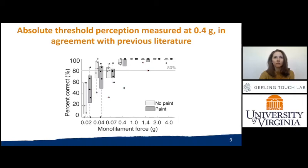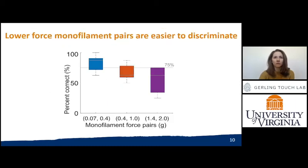While we measured no systematic impact of paint on perceptual response, we would like to note that these findings are restricted to the range of monofilaments used in this study and a relatively modest cohort of participants. We also evaluated psychophysical discrimination thresholds with three monofilament pairs.